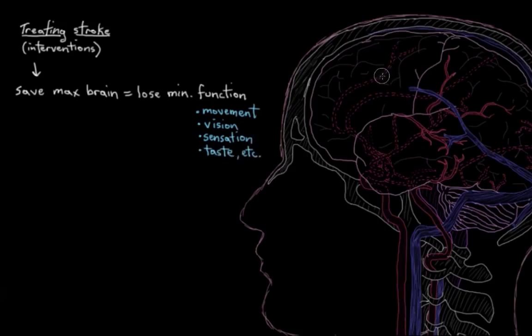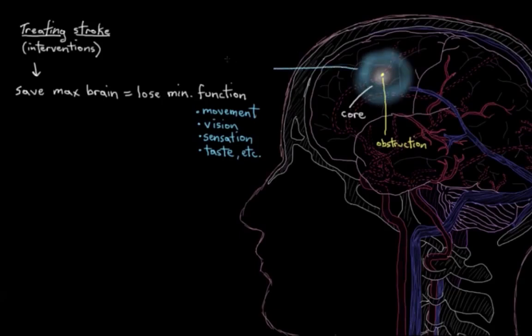So you might remember that in any ischemic stroke, there's a core area of neurons right at the site of the blood vessel obstruction, so there's brain tissue there that'll usually be irreversibly damaged within a few minutes of losing their blood supply. So that's not great,